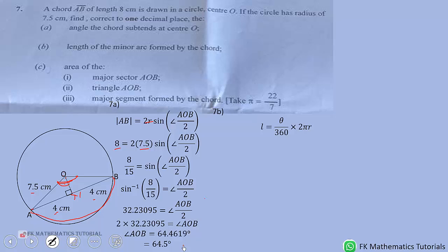So the theta is what we found, 64.5, but let's use these parts in our working so that we will not exaggerate our answer. So this one is already in the formula, and 22 by 7 is the pi, and 7.5 is the radius. So we calculate and simplify to get 8.4 centimeters.